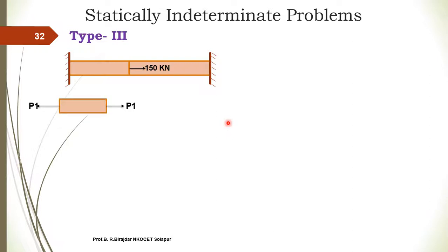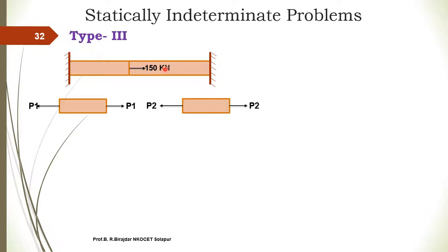We draw the free body diagram separately for the first and second body. First, we assume the forces acting on each body to be tensile. The tensile force on the first body is assumed as P1, and on the second body as P2. When we join the first and second body, the resultant force should be 150 kN towards the right. Since P1 acts towards the right and P2 towards the left, P1 must be greater than P2. This gives us the equation: P1 minus P2 equals 150 kN.